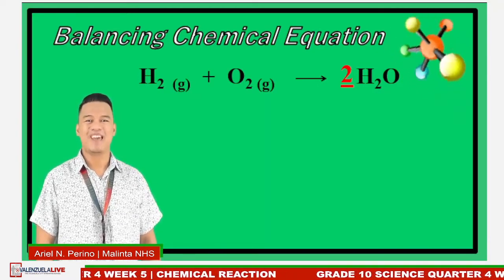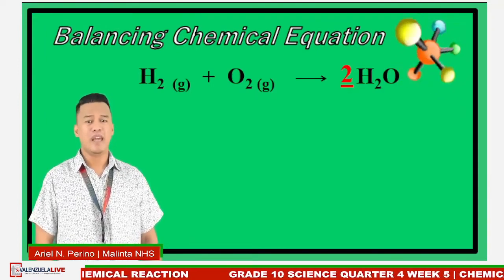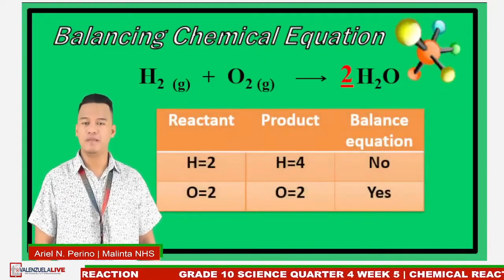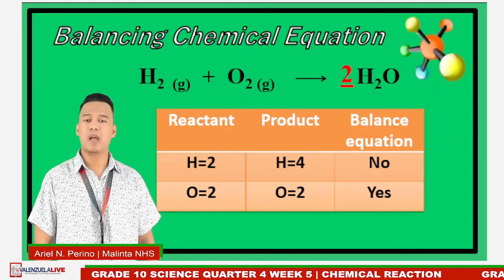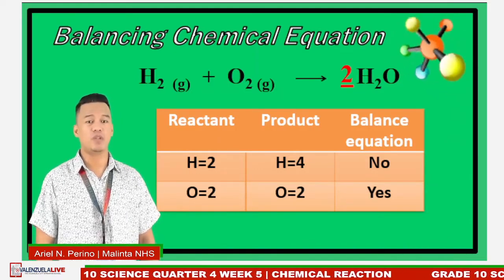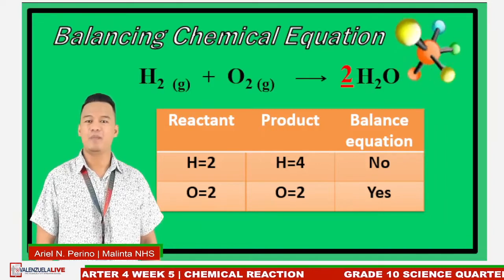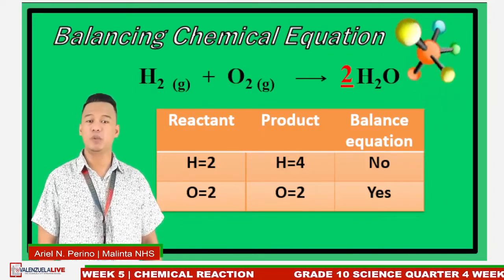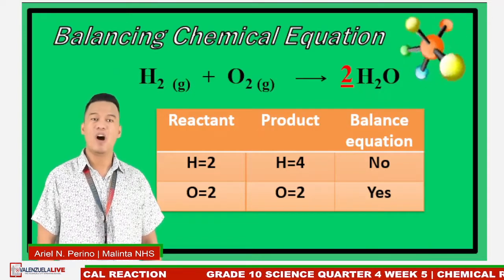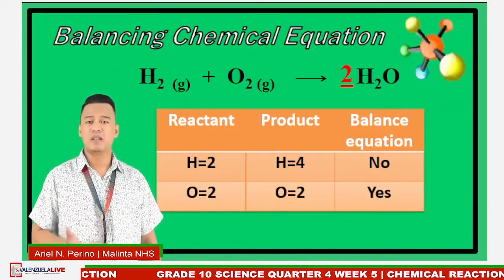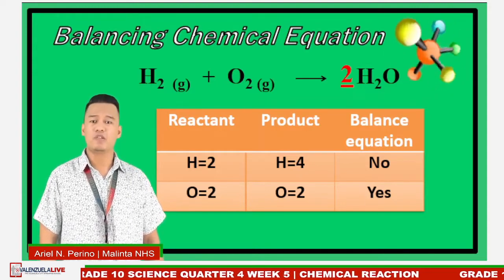Now, let's count and check if the atoms in the reactant and product are balanced. In the reactant, there are two hydrogen and two oxygen atoms. In the product, we multiply coefficient 2 by the subscript of hydrogen, which is 2 — giving 4 hydrogen atoms. For oxygen, we multiply coefficient 2 by 1, giving 2 oxygen atoms. However, our attempt to balance oxygen results in an unbalanced hydrogen, so it needs to be rebalanced.